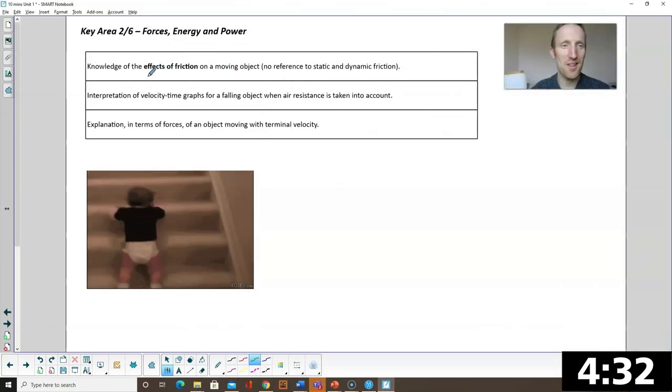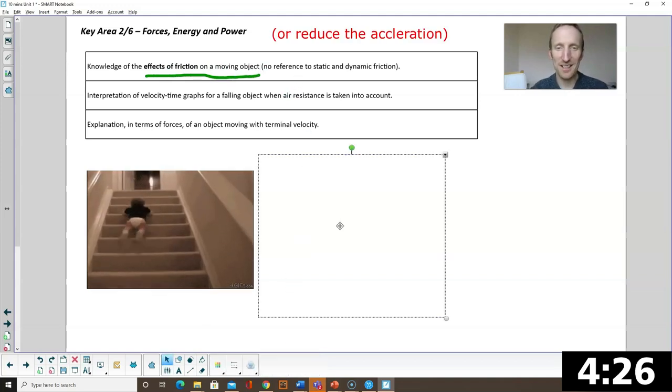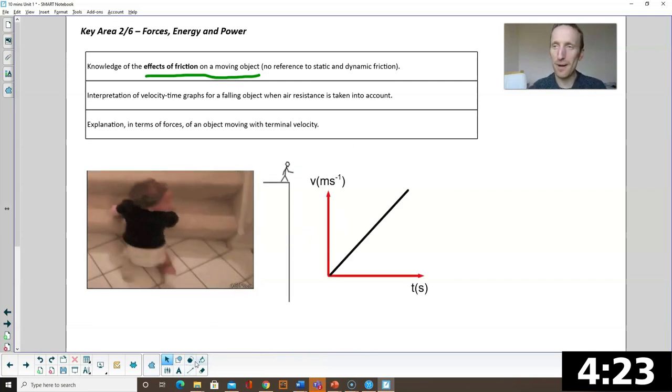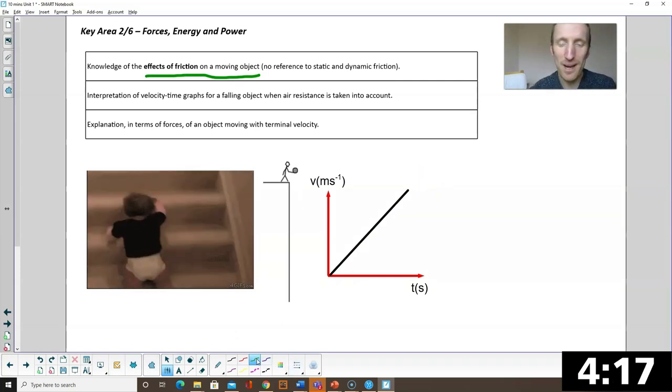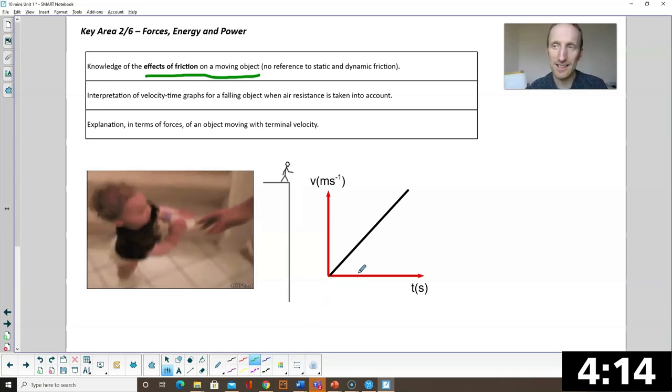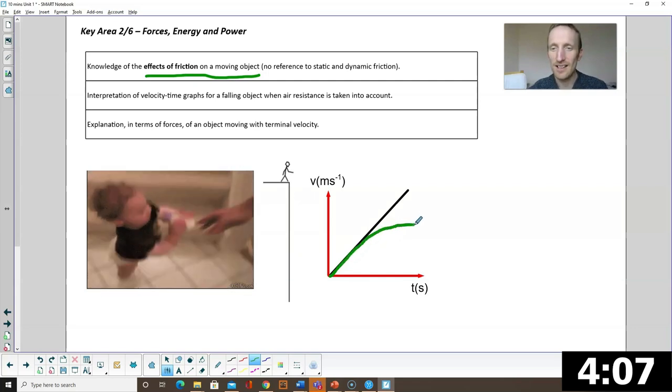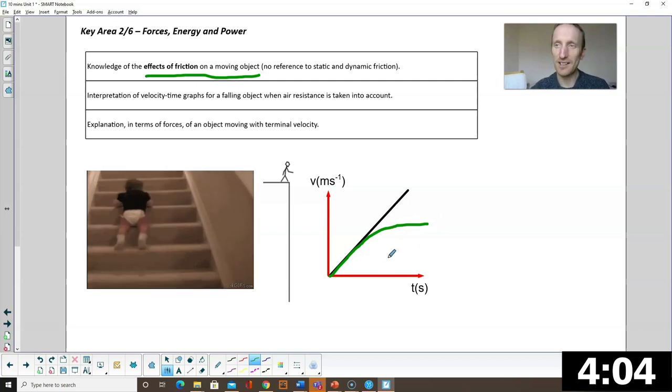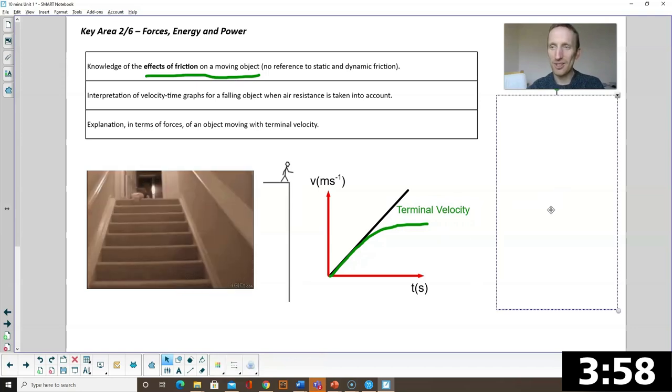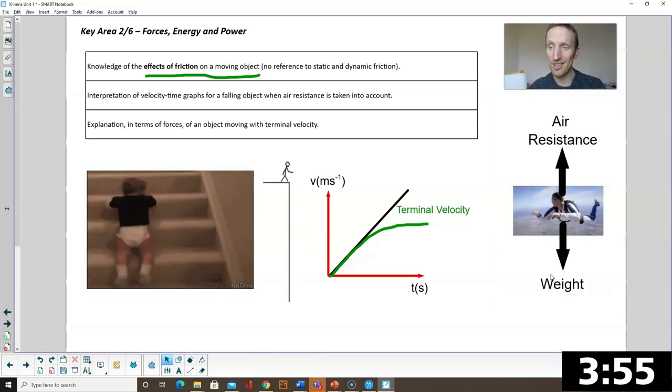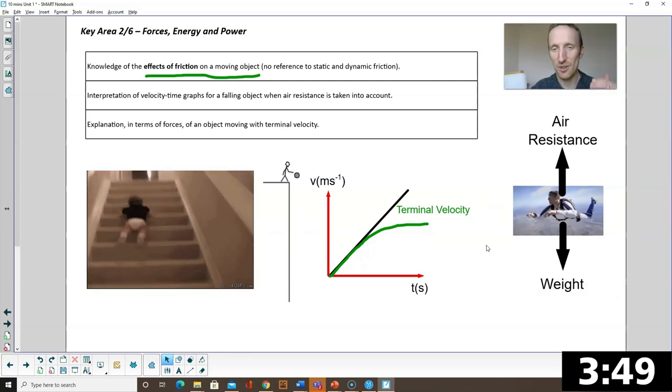Okay if you've ever had a carpet burn you'll know that the effect of friction on a moving object is to slow it down. And one scenario to consider is a falling object. So if we drop a ball, if we do a velocity time graph, the velocity would increase as the ball accelerates. But in reality as the ball gets faster, air resistance increases, the air friction increases. So in actual fact what happens is as air resistance increases, the velocity will level off, the acceleration will reduce, and we reach something called our terminal velocity. The terminal velocity occurs when the air resistance has increased so much that it now balances out the weight and therefore we stop accelerating and we stay at a steady velocity called our terminal velocity.